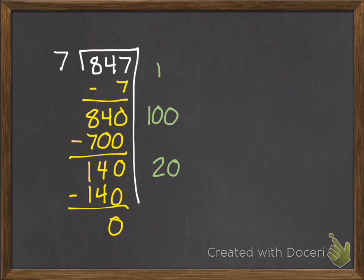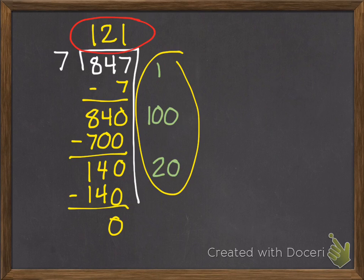So I can't take out any more 7s because there's nothing left. So I add up my partial quotients, 1 plus 100 plus 20, which equals 121, no remainder because there weren't any left.